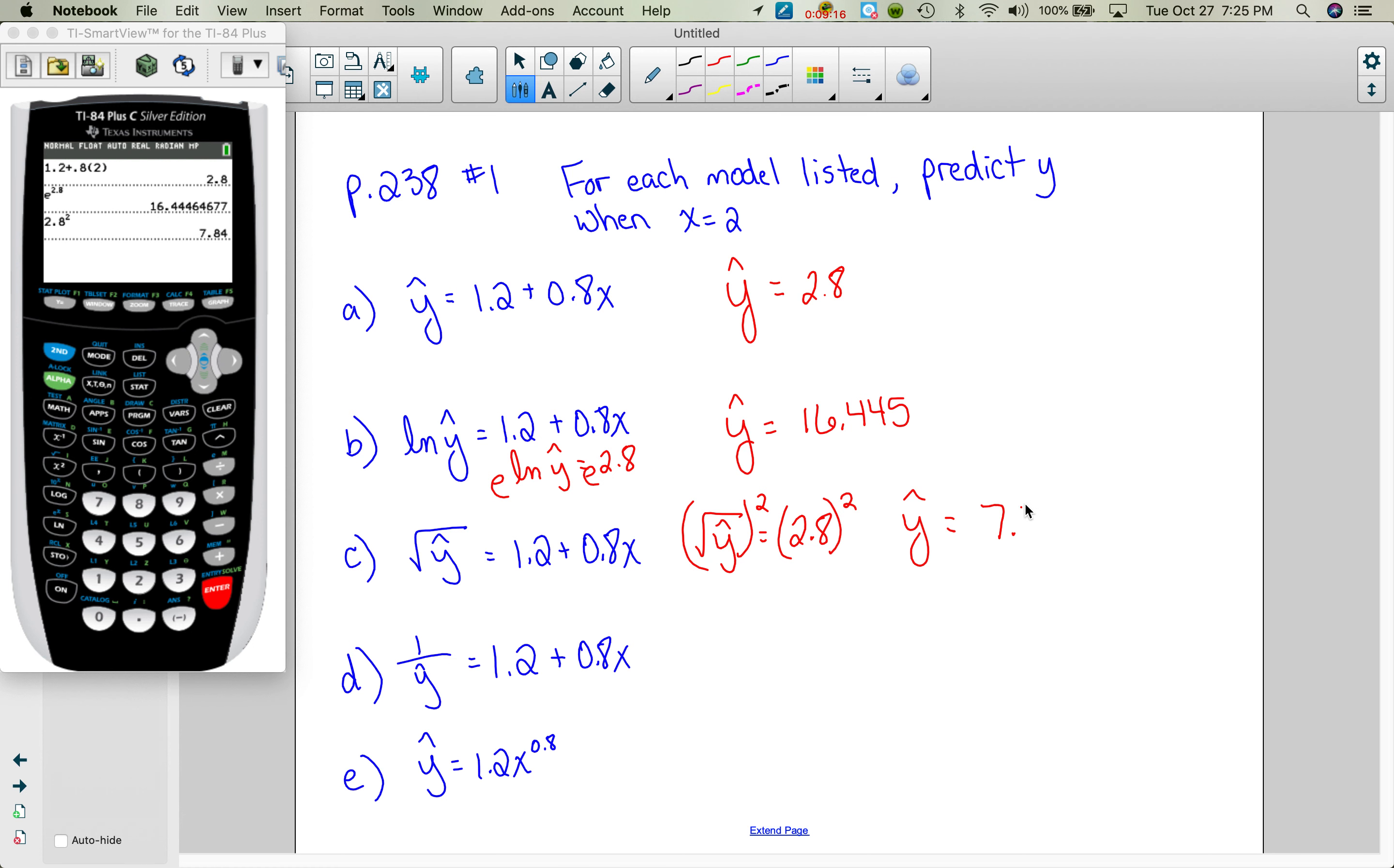So for the next one, plug in a 2. I get 1 over y hat equals 2.8. And then I need to do the reciprocal of that, so then y hat equals 1 over 2.8. You can do 1 divided by 2.8, but in case you didn't know, if you go 2.8 and you hit this x to the minus 1 key, that does the inverse. So we get 0.357.